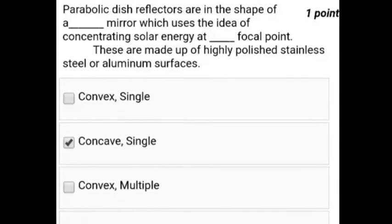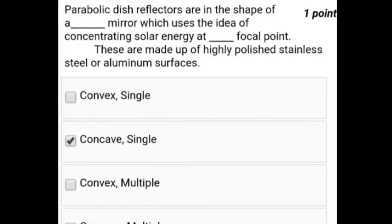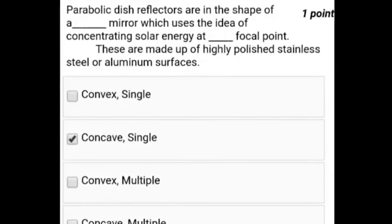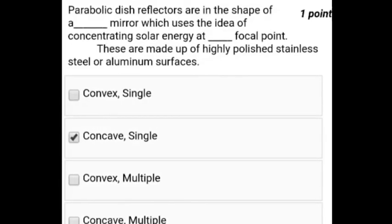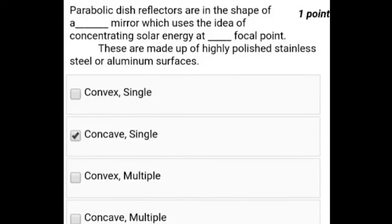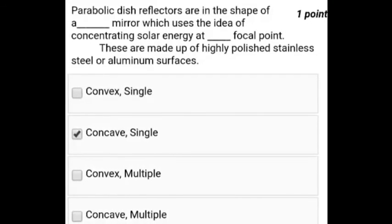Now we will see our ninth question. Parabolic disc reflector are in the shape of a dash mirror which use the idea of concentrating solar energy at dash focal length. These are made up of highly polished stainless steel or aluminum surface. So this answer will be concave and single focal point is there.